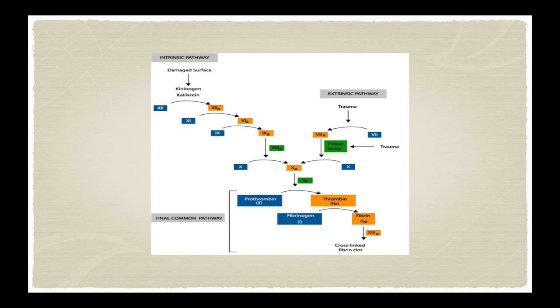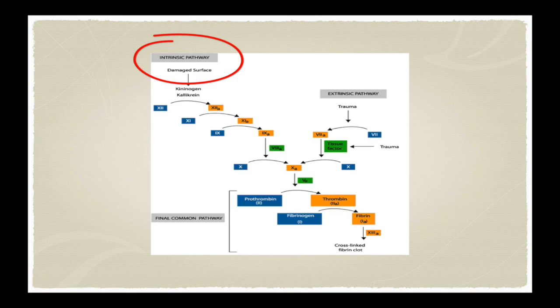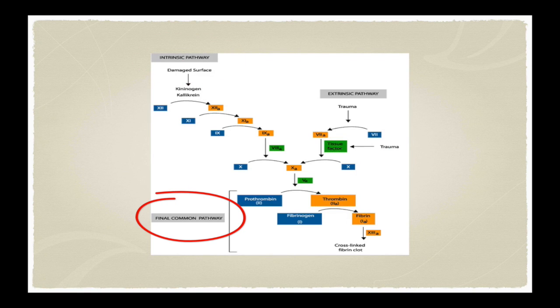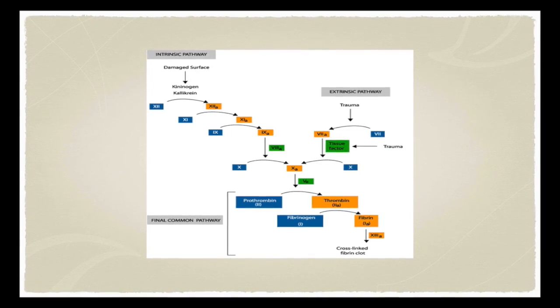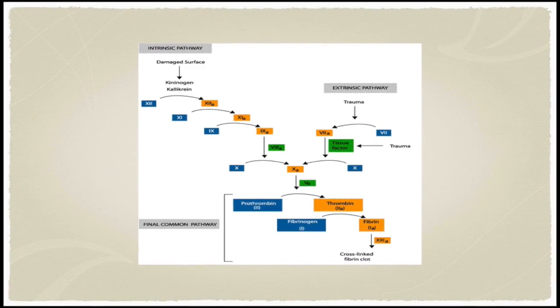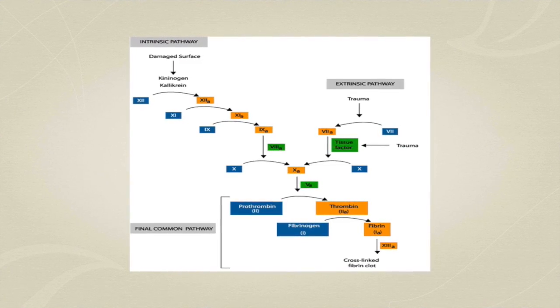That basically sums it up as a big picture view. We were all familiar from school with the extrinsic and intrinsic pathways of coagulation. The important take-home message is that there are three pathways involved: an extrinsic pathway, an intrinsic pathway, and a final common pathway where the two converge. The key is knowing which factors are associated with which pathway — factor 7 with the extrinsic, factors 12, 10, and 9 mainly with the intrinsic, and factor 10 is the starting point of the final common pathway.